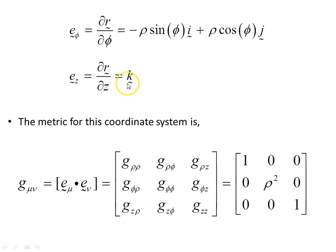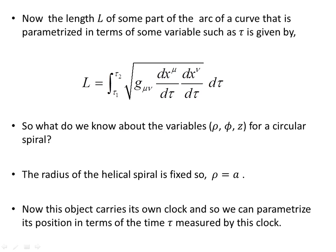And Gzz, that's this one here, dotted with itself, we'll get 1. All the others, because of orthogonality, will go off to 0, they'll drop off. And so here's our metric for this space, for these coordinates. Next, the length of some part of the arc, however much we want to look at, that is parametrized in terms of some variable such as tau, is given by this expression here. So here's the metric, here's the derivative of each of the coordinates with respect to tau, and then we integrate with respect to tau, between tau subscript 1 and tau subscript 2, so that's one point in time, another point in time.